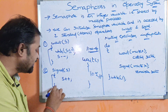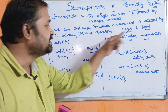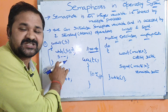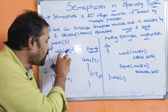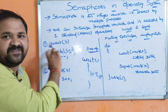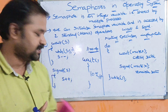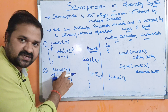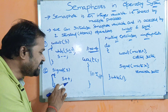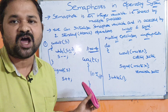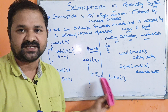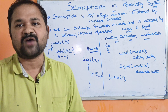Now let us see the second operation — signal. Both wait and signal are atomic operations. In the wait function we have two statements, and it is not possible to stop this function mid-execution. For signal(S), we simply increment the value of the semaphore by 1. There is no need to check any condition — there is only one statement: S++. Semaphores are mainly useful in order to implement mutual exclusion.